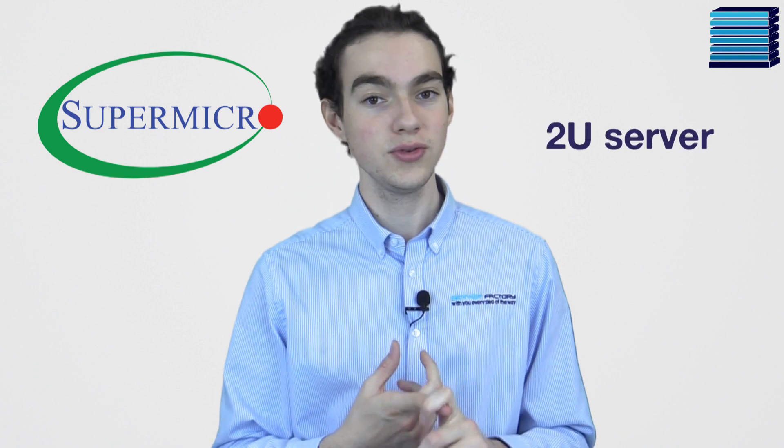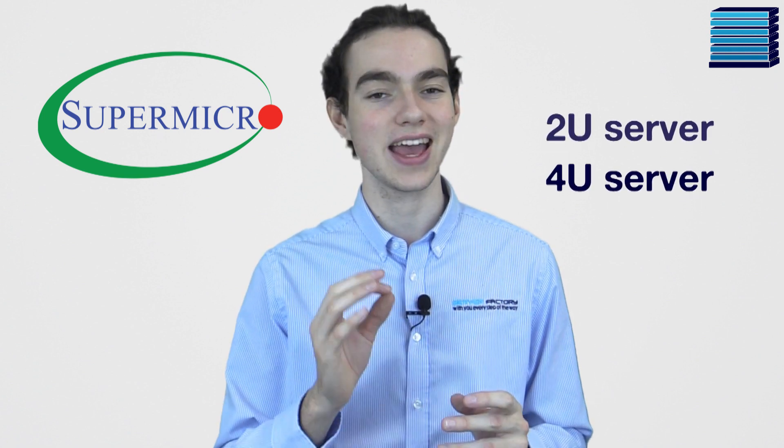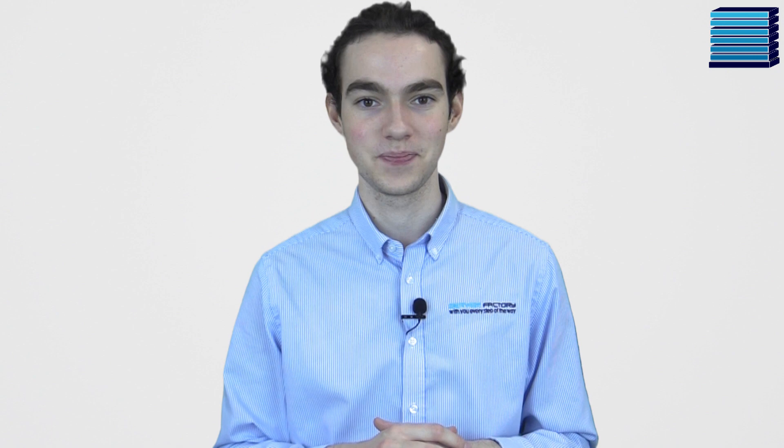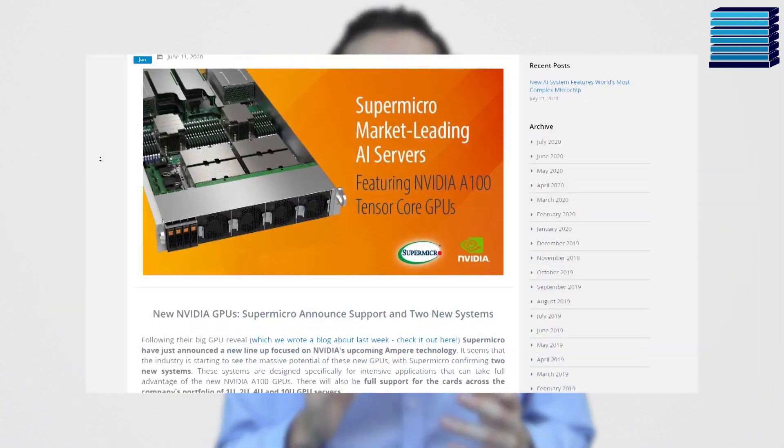So these GPUs were announced a couple of months ago now, and since then a number of companies have made announcements about how they'll be using them. Supermicro have announced their full support, along with two new systems based around the A100, a 2U server and a 4U server, both using AMD EPYC processors. We wrote a blog about this recently, so if you're interested, check it out in the description below.